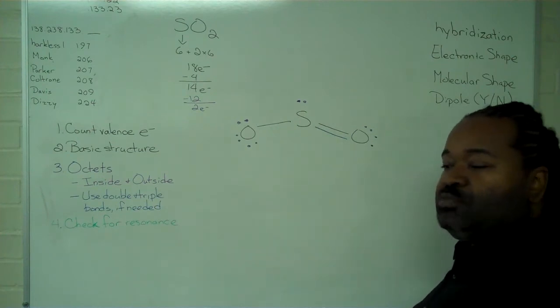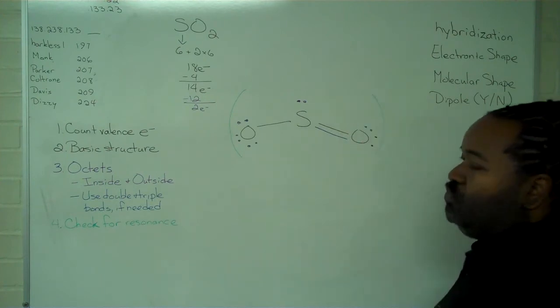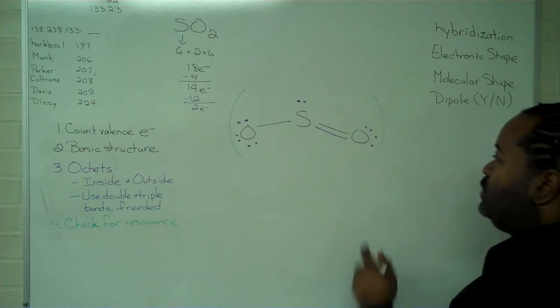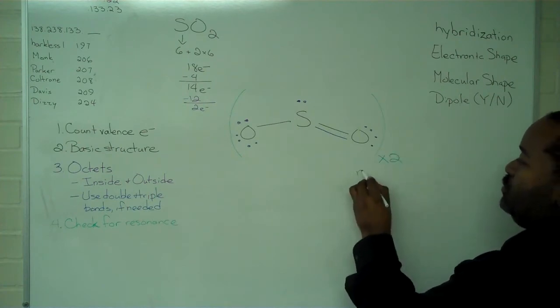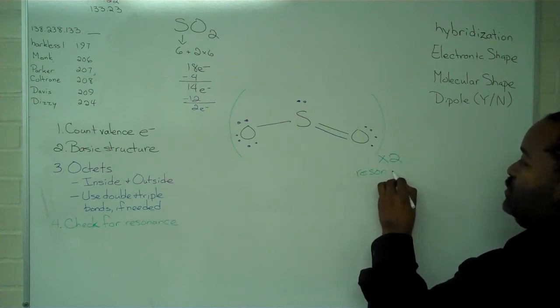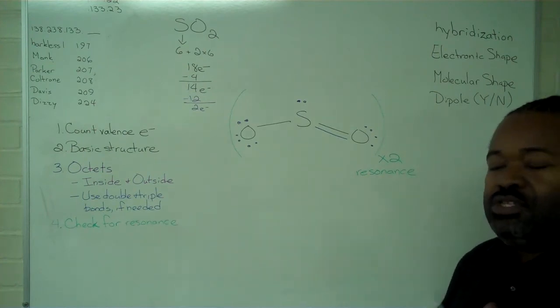Because it's possible to write two structures that are correct with just a flip or a rotation, then we want to acknowledge that by saying times 2 for resonance. So this completes the Lewis structure portion.